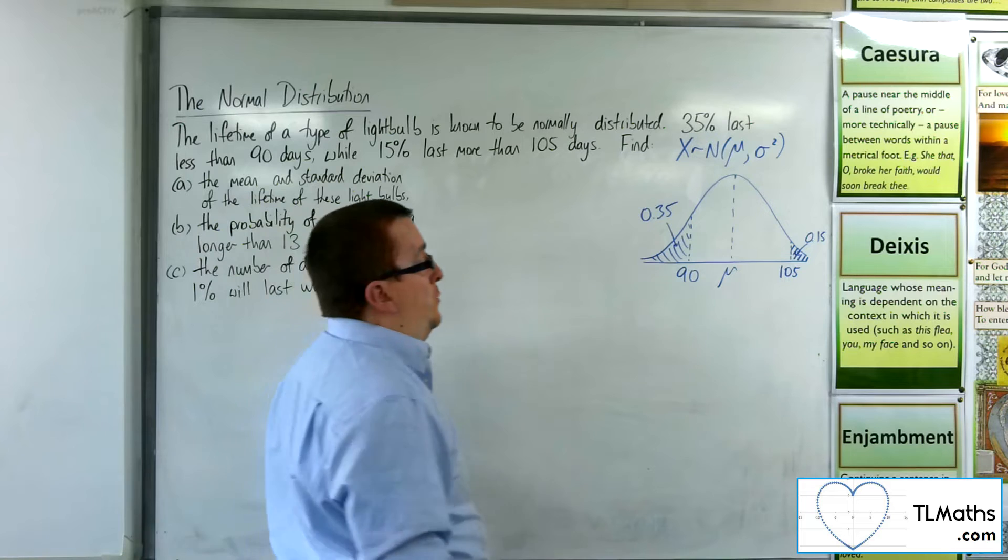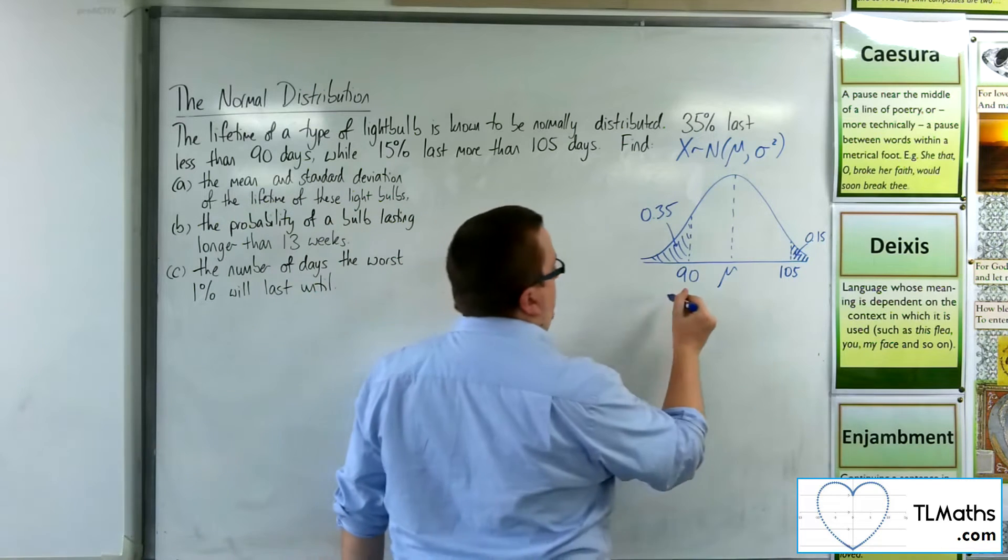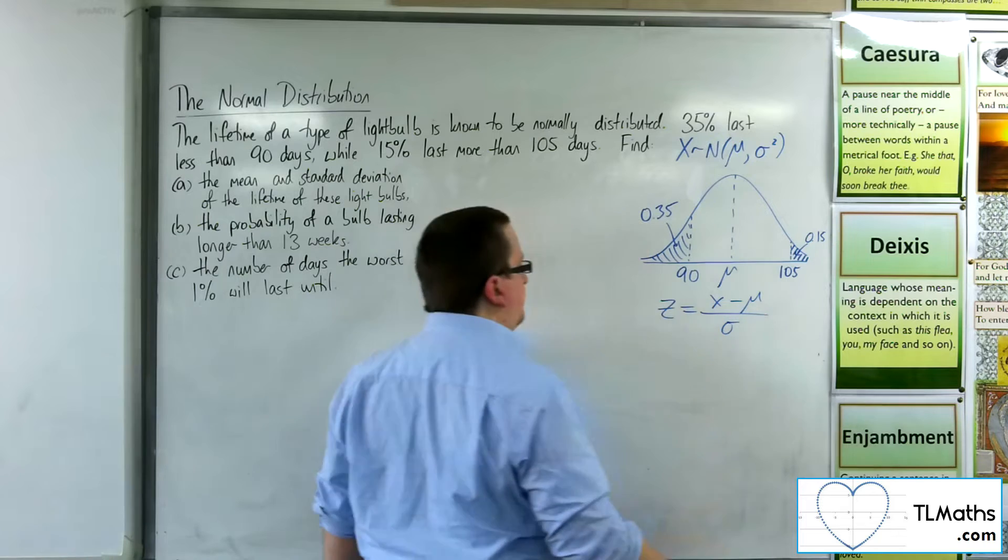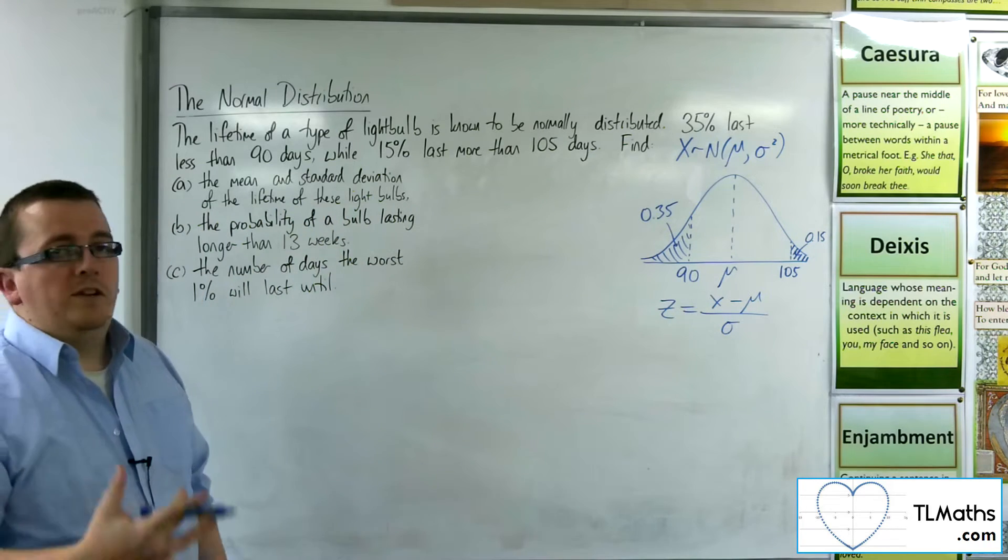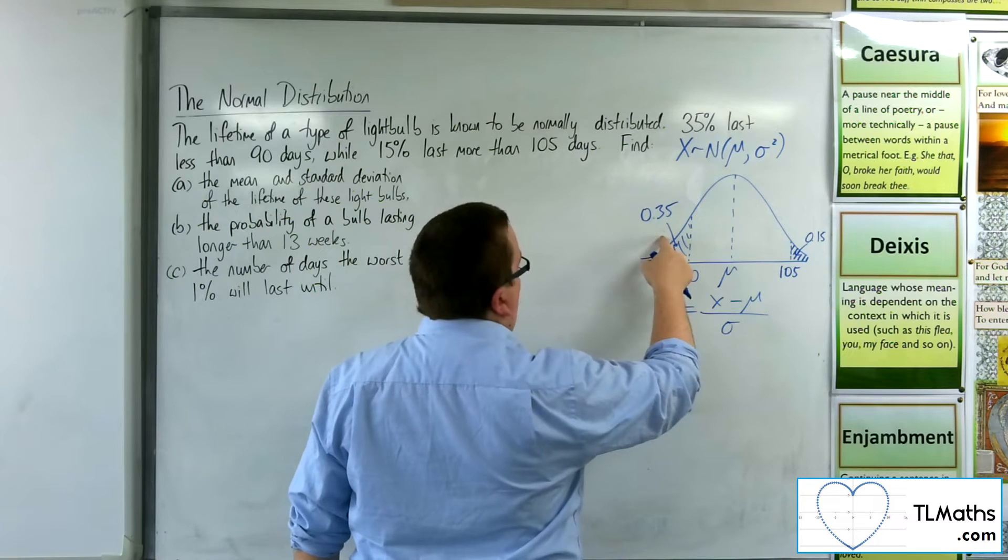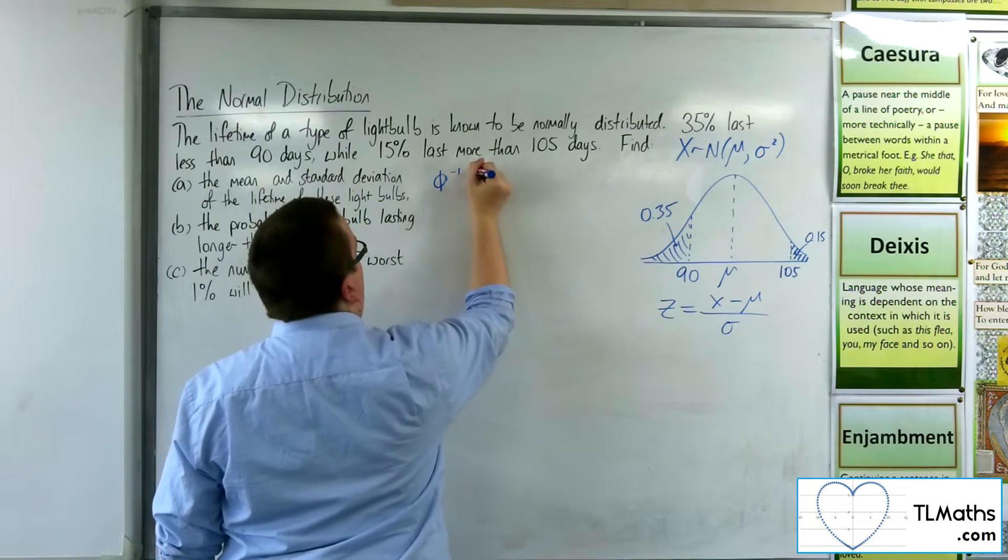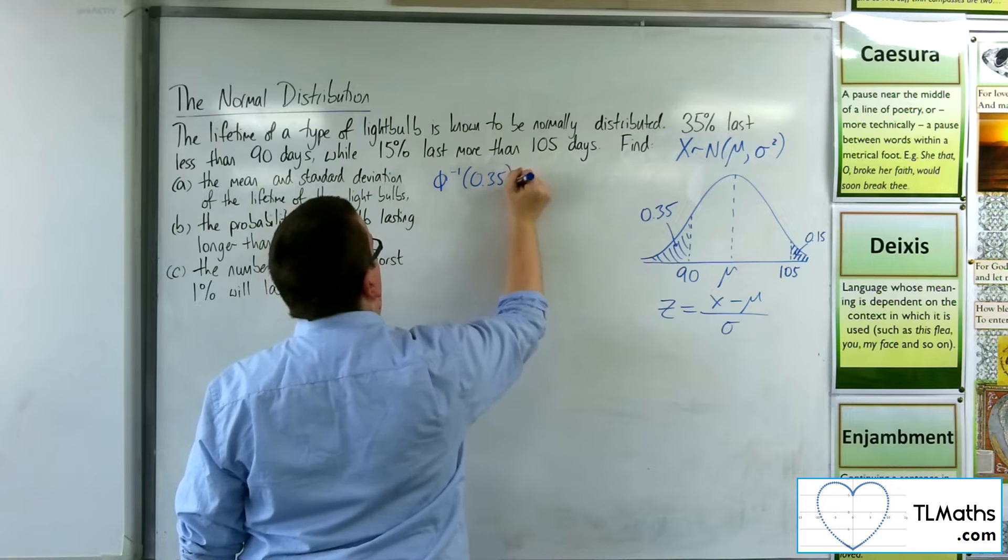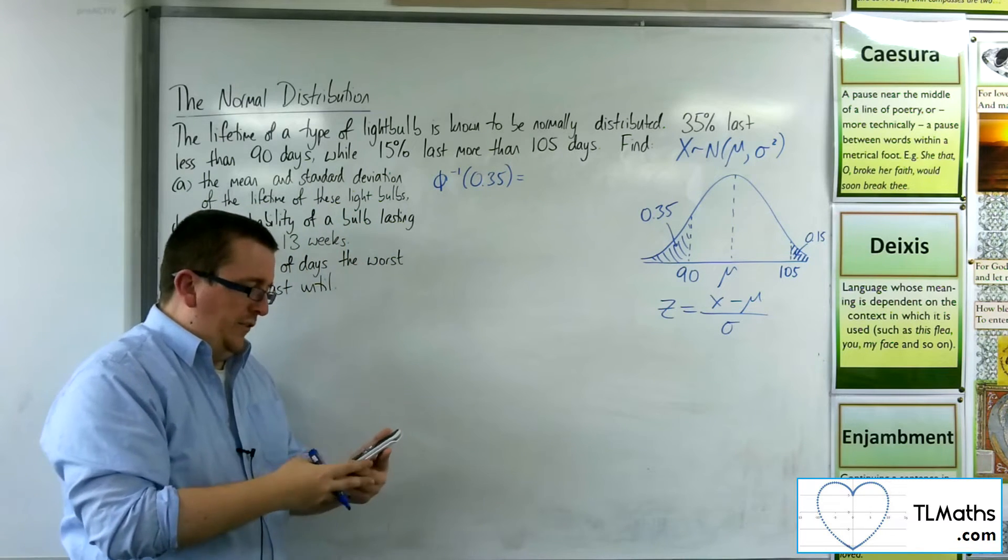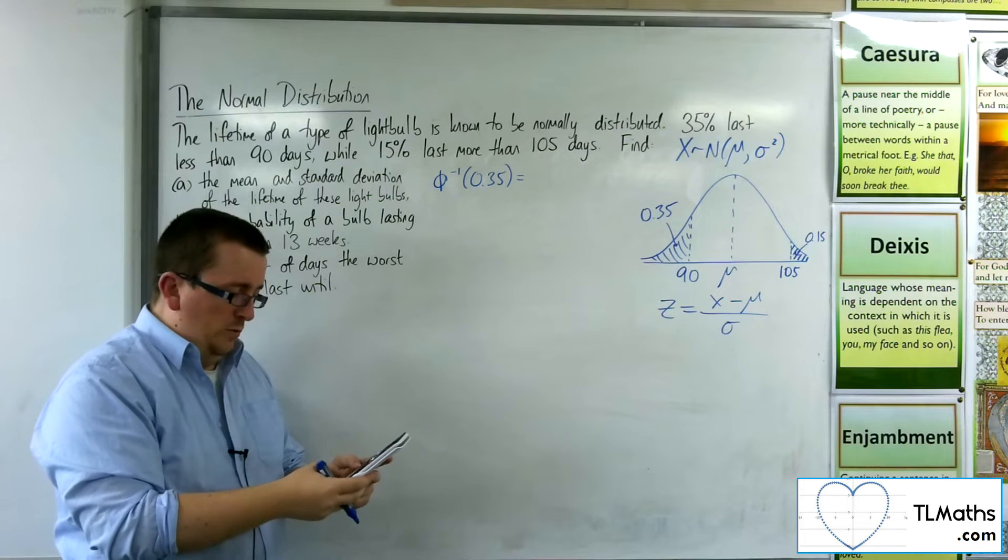So what I want to do is I want to utilise the z equals x minus mu over sigma formula here to find the two z values that I need. So for this first z value, I need to find the inverse norm of 0.35. So I go on to menu and then number 7 and then inverse normal, number 3.